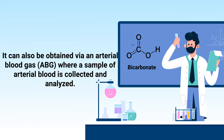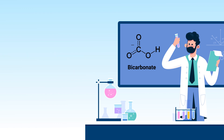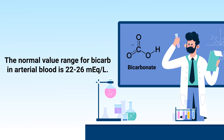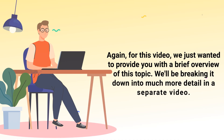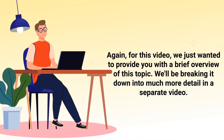Bicarbonate can also be obtained via an arterial blood gas, where a sample of arterial blood is collected and analyzed. The normal range for bicarb in arterial blood is 22 to 26 milliequivalents per liter.